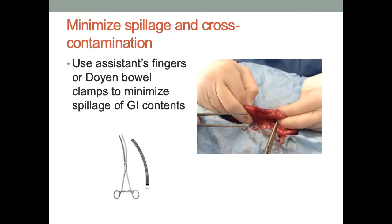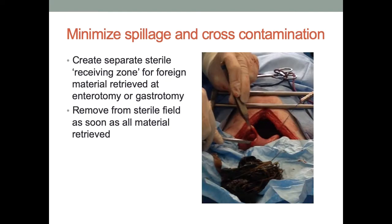To minimize GI contents coming out, use an assistant's fingers if available, or Doyen bowel clamps. I always put Doyens on my finger before clamping them on the bowel to check the pressure they create — you don't want a big purple stripe where you left it. Create a separate landing pad zone for material you're pulling out — for a gastrotomy removing foreign material, lay a secondary drape nearby so drippage doesn't go everywhere. Dump it off your table and out of your field as soon as you can.